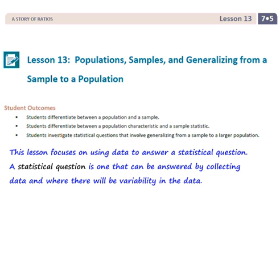Student outcomes for this lesson: Students differentiate between a population and a sample. Students differentiate between a population characteristic and a sample statistic. Students investigate statistical questions that involve generalizing from a sample to a larger population. This lesson focuses on using data to answer a statistical question — one that can be answered by collecting data and where there will be variability in the data.